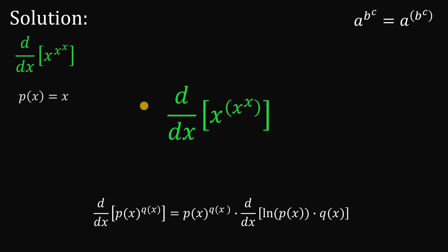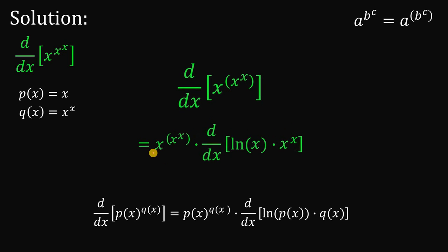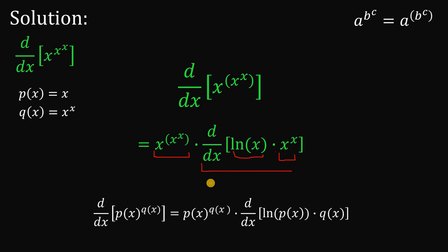Here, our p(x) equals x and q(x) equals x raised to the power of x. Now let's apply this generalized power rule. This is equivalent to x raised to x raised to x, times the derivative of ln of x — which is our p(x) — times q(x), which is x raised to the power of x. And since it is a product, we will use the product rule.